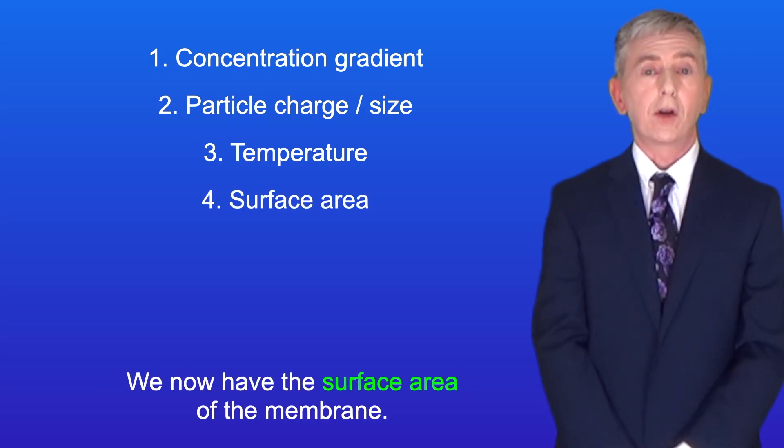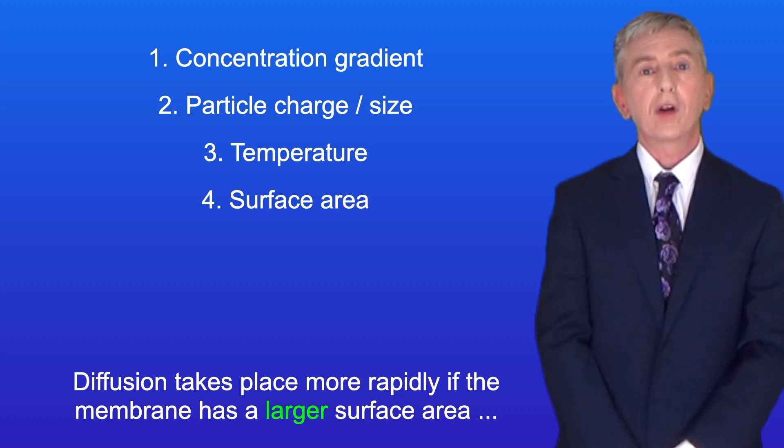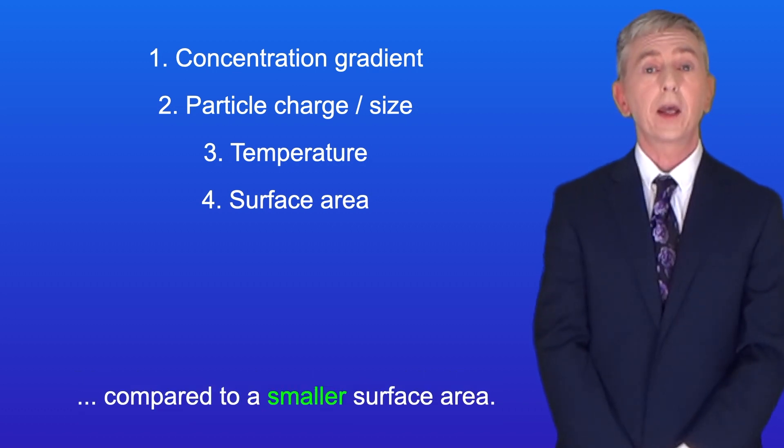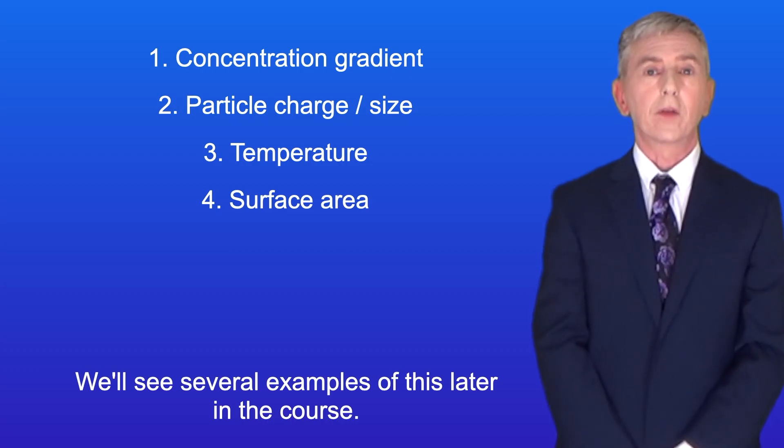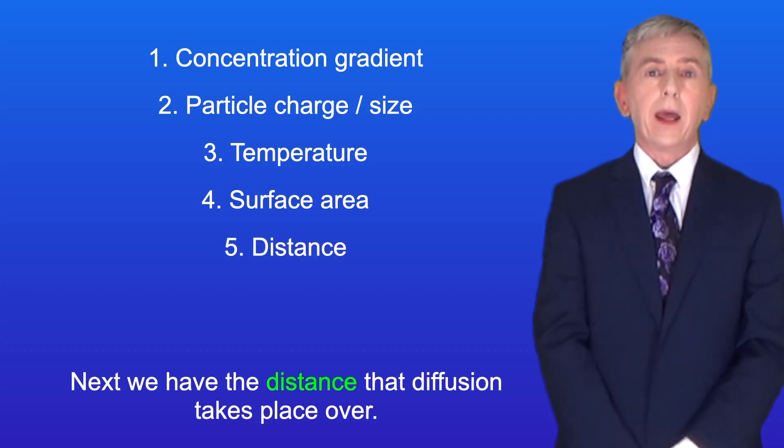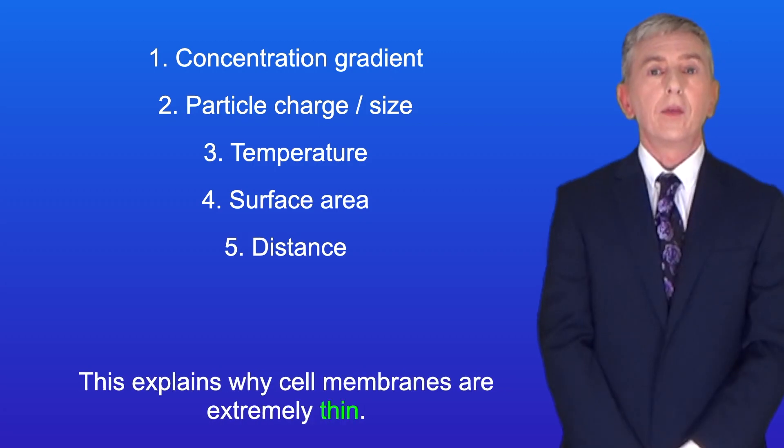We now have the surface area of the membrane. Diffusion takes place more rapidly if the membrane has a larger surface area compared to a smaller surface area. And we'll see several examples of this later in the course. Next, we have the distance that diffusion takes place over. The greater the distance, the slower the rate of diffusion. And this explains why cell membranes are extremely thin.